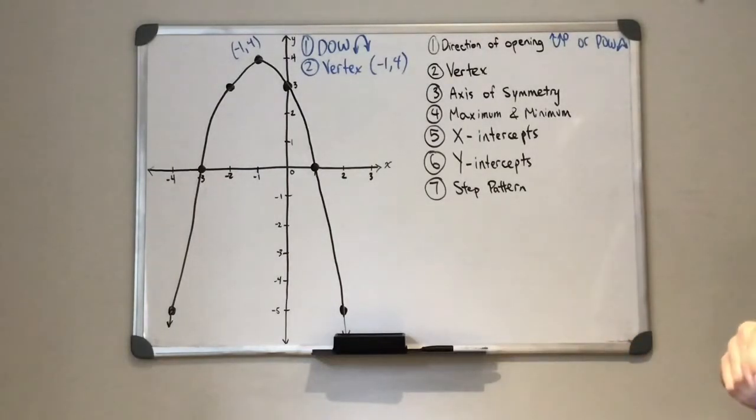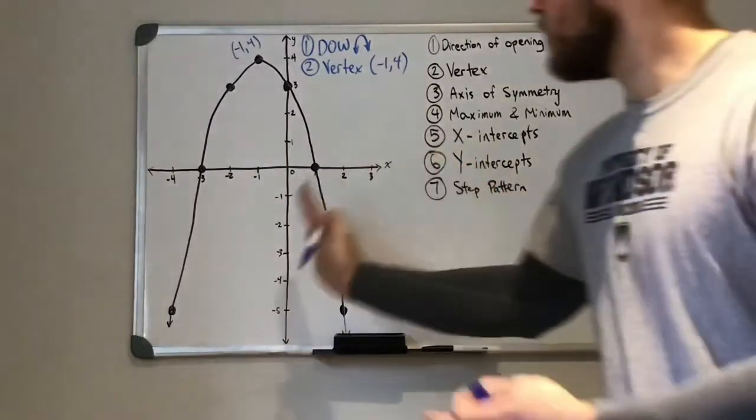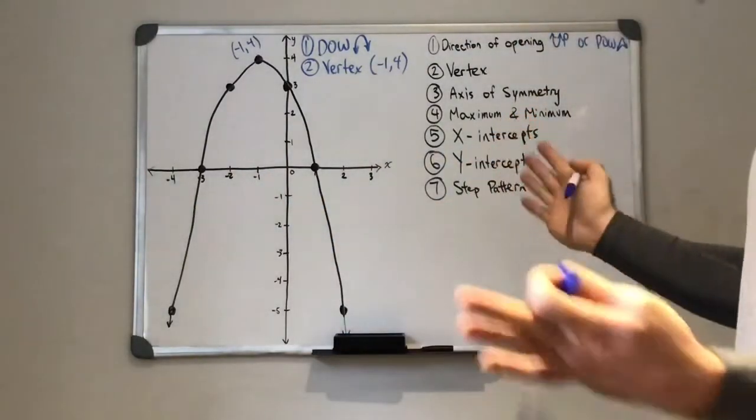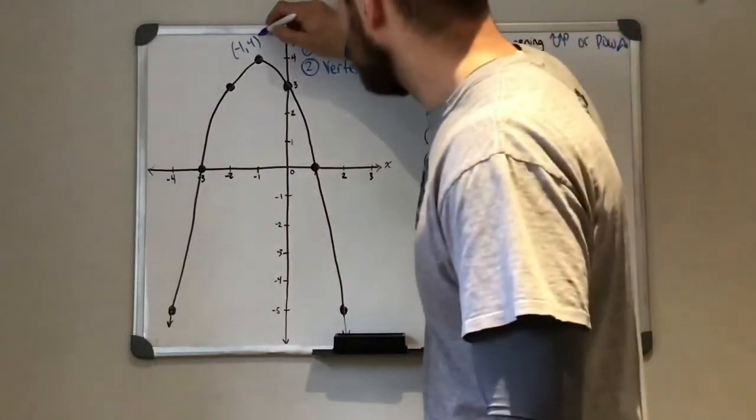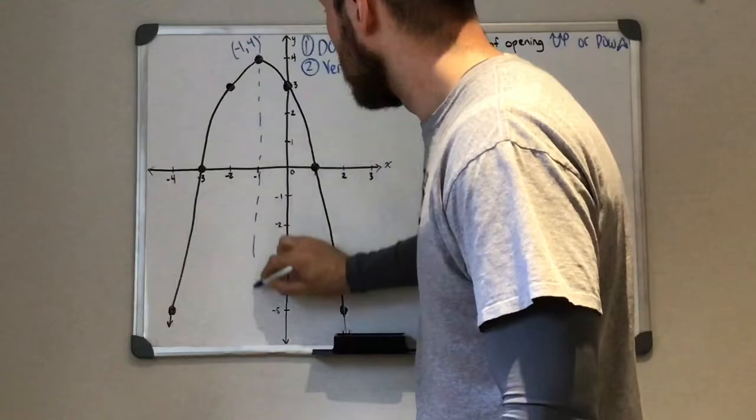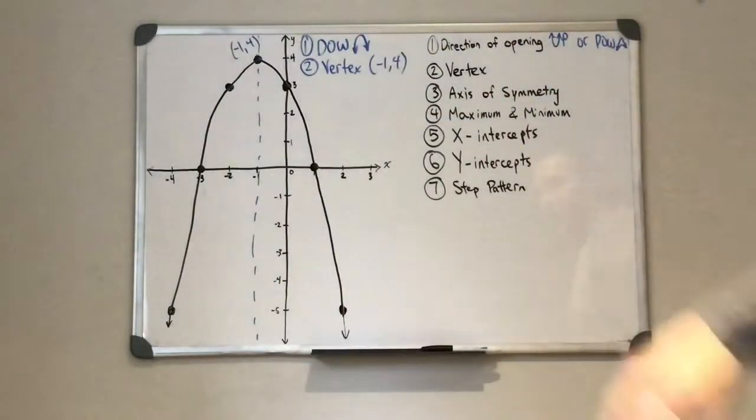Axis of symmetry. Now this parabola, it's symmetrical. So you can see on both sides it's kind of like a mirror image of each other. So the axis of symmetry is going to be a vertical line that kind of passes through the middle.